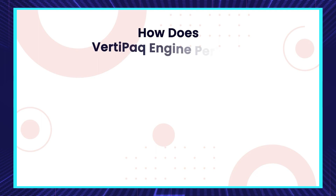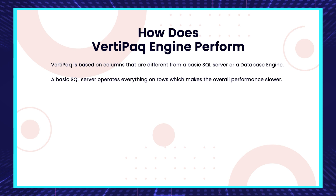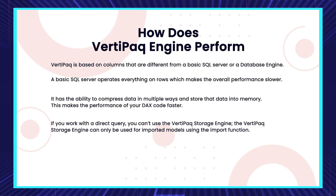How does the VertiPaq engine perform? VertiPaq is based on columns, which is different from a basic database or SQL server engine. A SQL server engine operates and stores data in terms of rows, which makes performance comparatively slower. VertiPaq has the ability to compress and store data in memory, making performance of any data loaded into Power BI — including DAX calculations, calculated columns, or calculated measures — far faster than a normal SQL server or basic database engine.